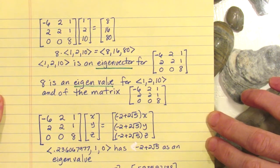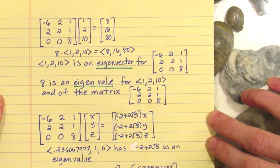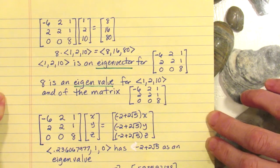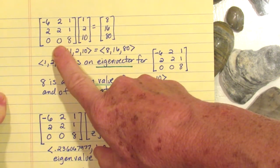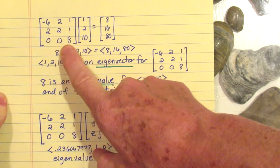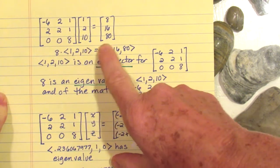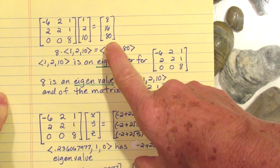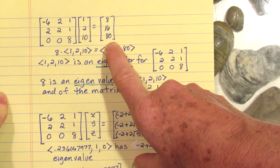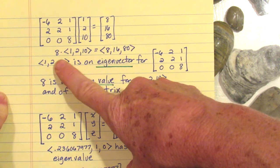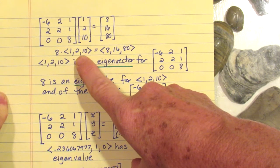In this episode of Remote Linear Algebra, we will be discussing the definition of an eigenvector and an eigenvalue. We have an example here of a three by three matrix, and when we multiply that three by three matrix by this vector, we get a new vector [8,16,80].